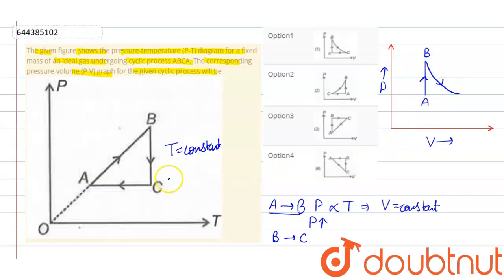Right, here the pressure decreases and volume increases, so this is point C.